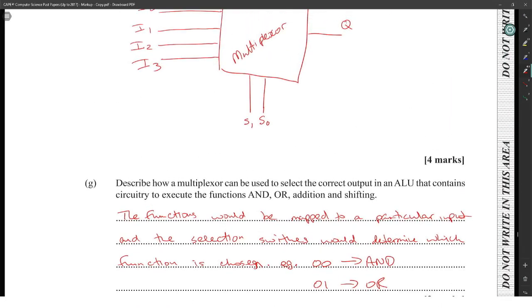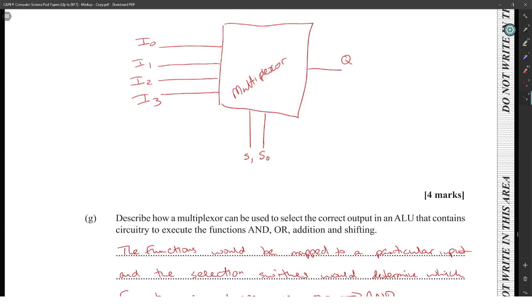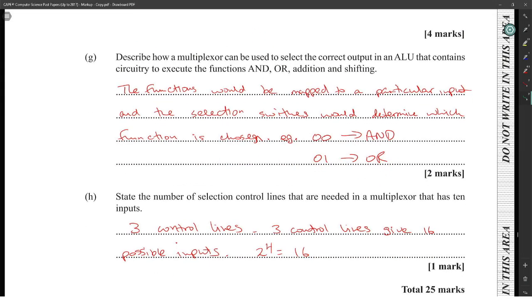State the number of selection control lines needed for a multiplexer that has 10 inputs. If you have 10 inputs, you would need four control lines, because four control lines will give you 16 possible inputs. You could write 2 to the 3 equals 8, 2 to the 4 equals 16. Once you mention the four, that's the key point. In actuality you could just put four and call it a day, but I was just writing all of this extra stuff here to make sure that you consider all the things you need to know when you do the answer.